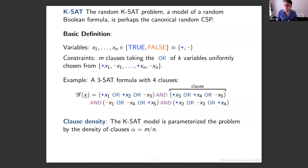The more constraints you have, the fewer solutions you have, and the harder it will be to satisfy all constraints at once. We parameterize the difficulty by alpha, the ratio of the number of constraints divided by the number of variables. We'll be interested in how the space of solutions changes as alpha increases.